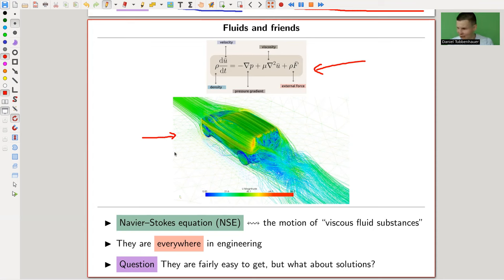Navier-Stokes was 1820, 1830, 1840, kind of easy to get. I hope that was right, I didn't double check that. It's a long time ago. It's really easy to get, but to solve it is a million prize problem, right?